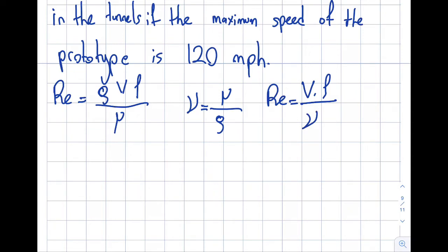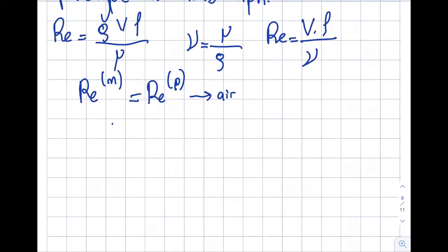For the model and prototype, Reynolds numbers must be the same. If I write it for both cases, starting with air: velocity of model times length of model divided by kinematic viscosity of model equals velocity of prototype times length of prototype divided by kinematic viscosity of prototype.